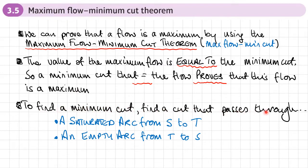To find a minimum cut, we need to find a cut that passes through a saturated arc — an arc going in a direction from source S to sink T — or an empty arc going from T to S. If we find such a cut, we've found a minimum cut, and if that equals the flow, the flow is a maximum.